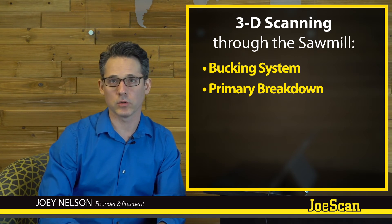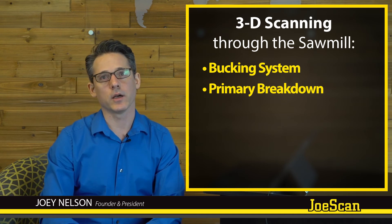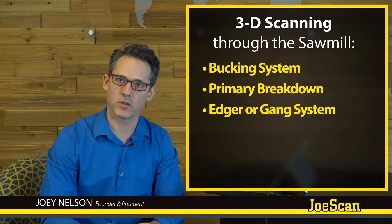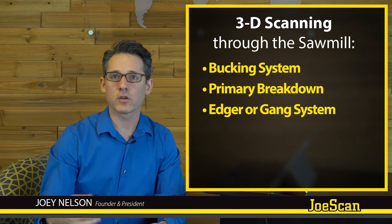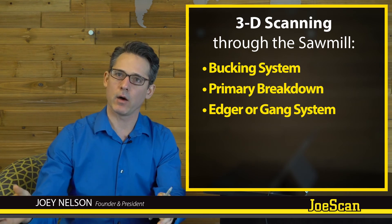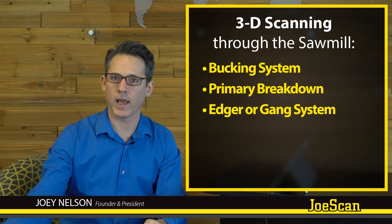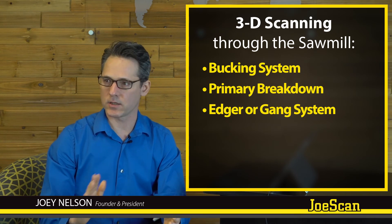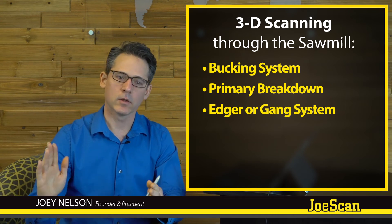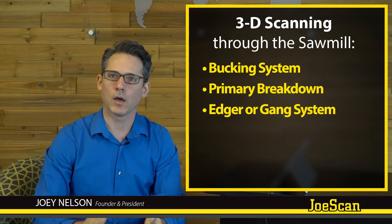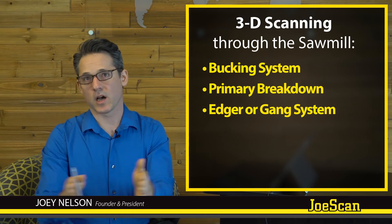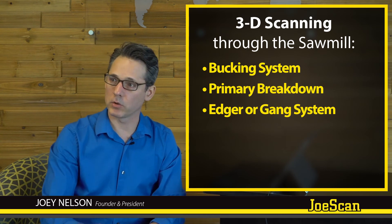From there, the cants and flitches will potentially be passed downstream to an edger or a gang system. You don't just trust that the machine upstream did what it said it was going to do — you need to re-scan and determine, based on what was actually cut and how it's being presented to the edger or gang, how you should cut that particular cant or flitch. You're making decisions on the taper, how the board is oriented, the offset, and potentially adding multiple boards into an edger decision.